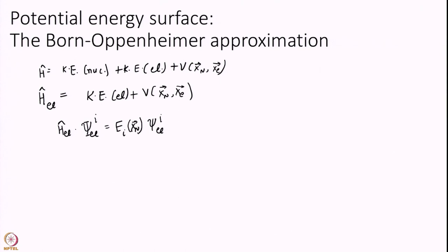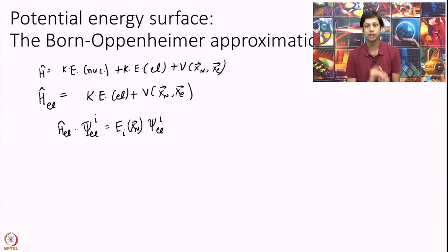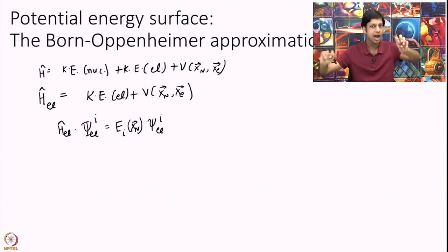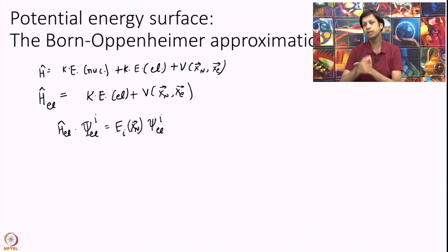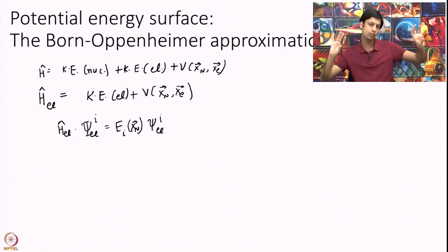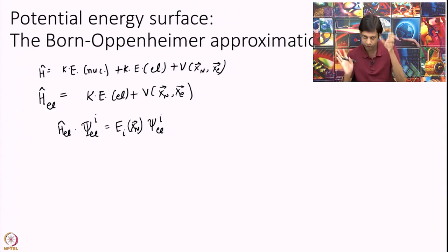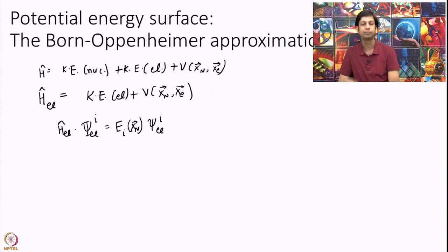We solve this equation for a fixed value of nuclear positions. This is a tricky concept — let me repeat it. What I have done is fix all the nuclear positions. For the HF molecule, I clamp the hydrogen nuclei and the fluorine nuclei. I only look at the kinetic energy of the electrons and the net potential that the electron feels with respect to these clamped hydrogen and fluorine. This is called electronic structure theory.